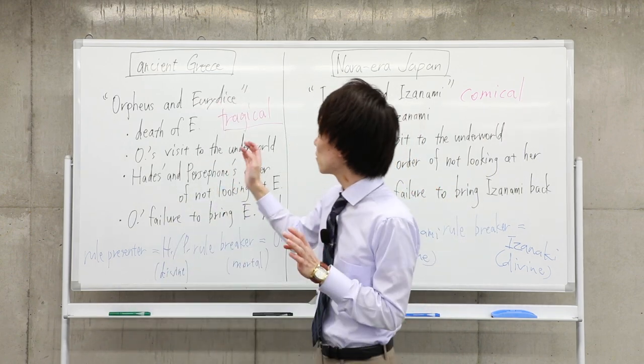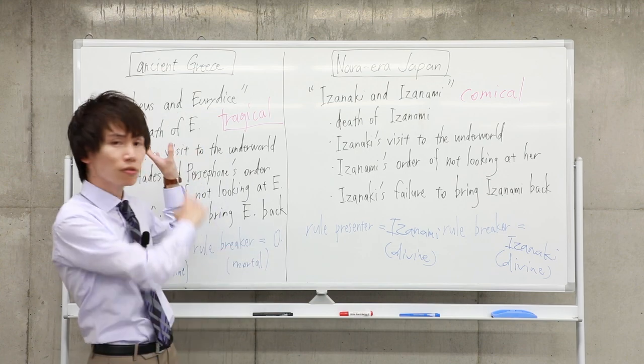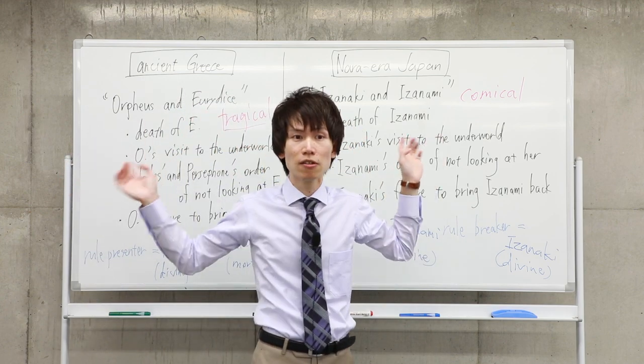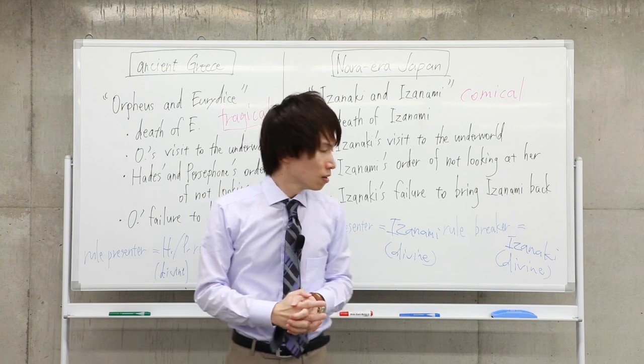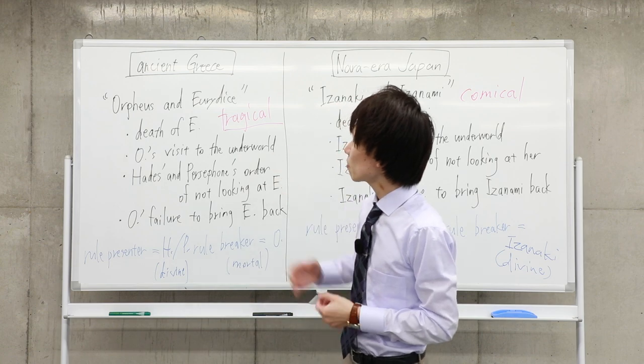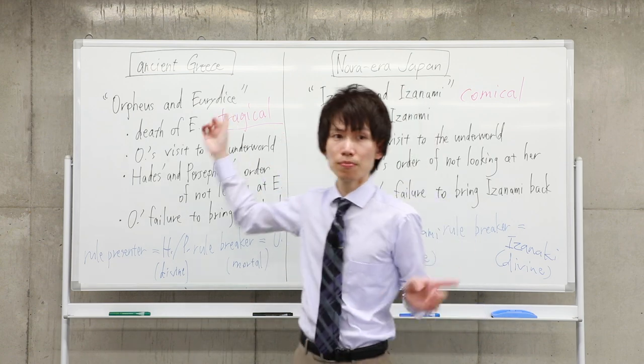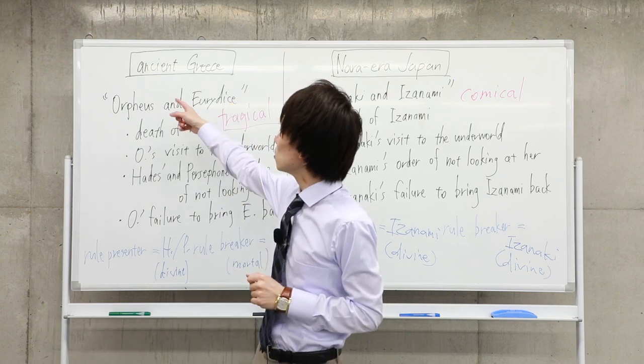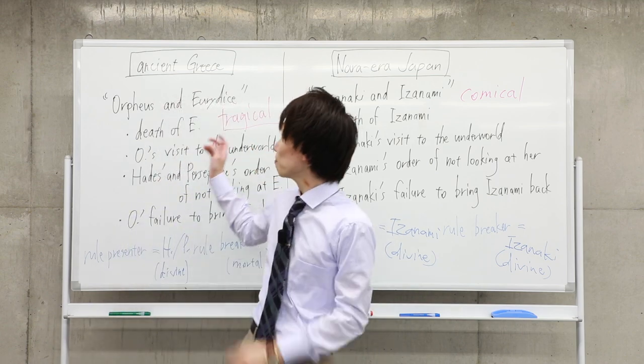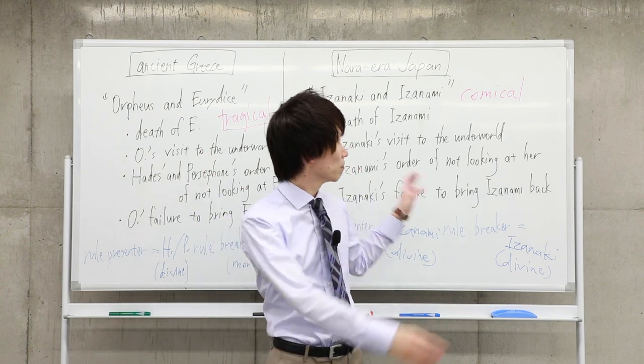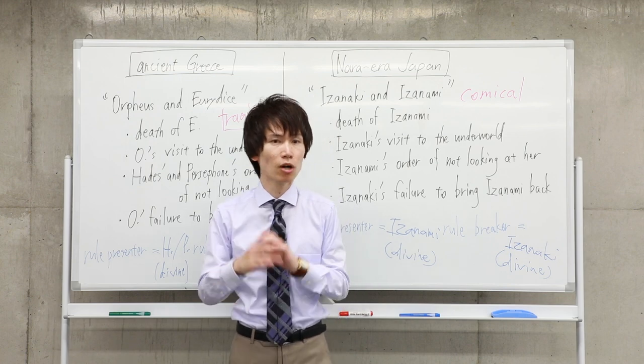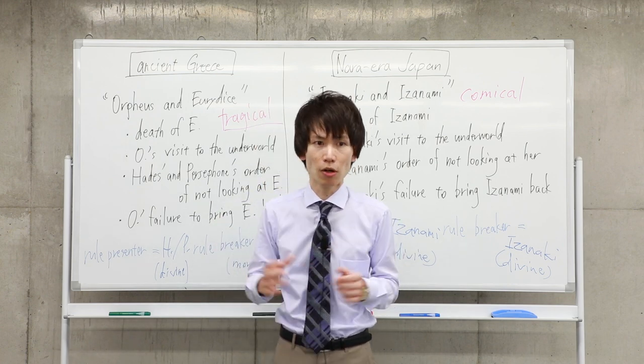As I'm saying, these two stories share the same character type and the same story type, but their impressions are very different from each other. Let me recapitulate today's talk. Today I introduced two stories, two concrete myths. One is from ancient Greece and one is from Nara, Japan. They share the same story type, same characters, but their impression is very different. And this is one aspect of the nature of myth.